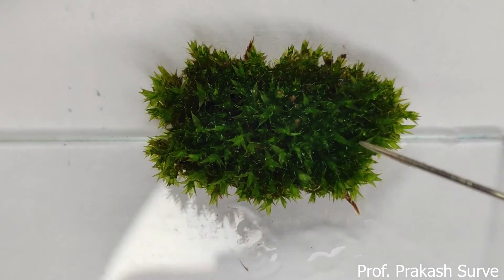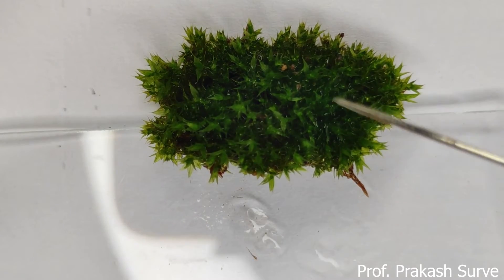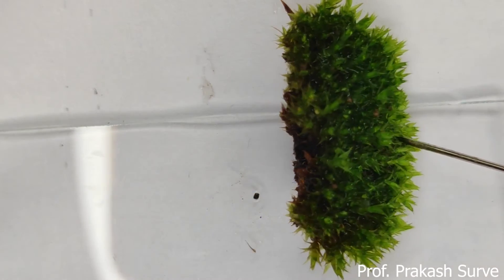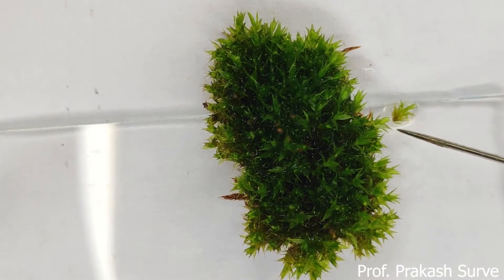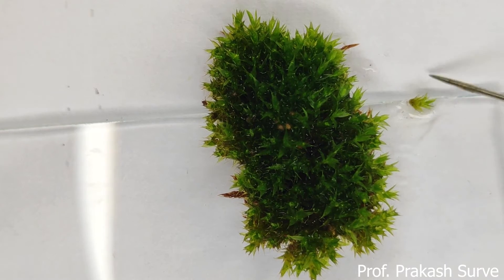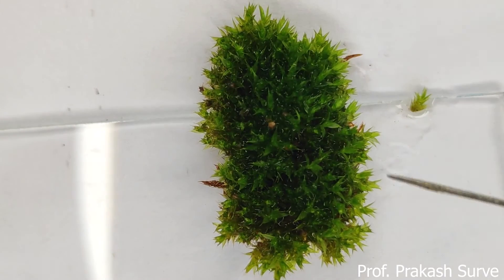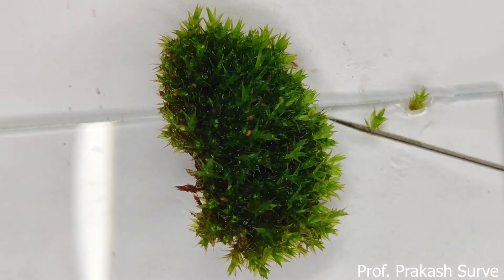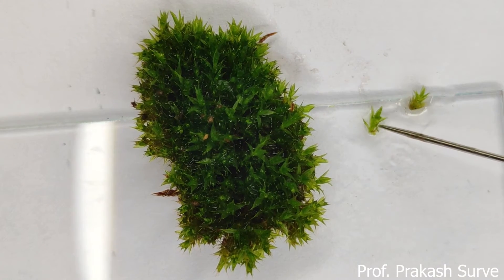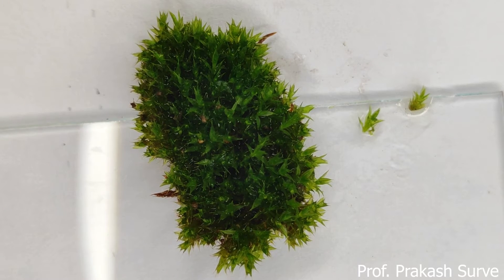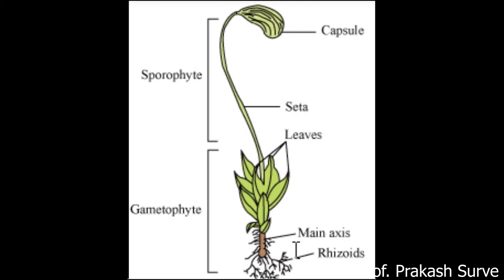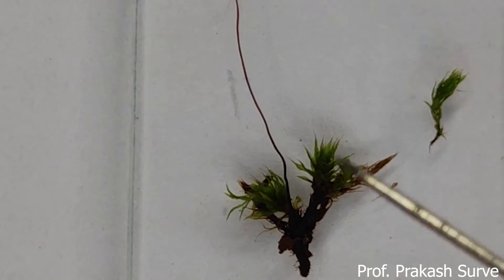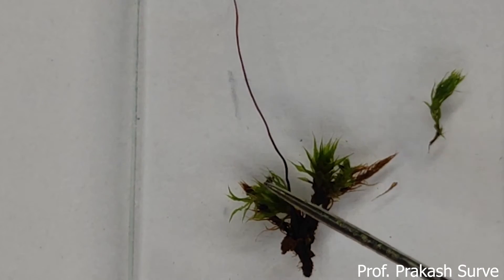Separating the plant we can observe the stem-like structure and leaf-like structures. The whole gametophyte and sporophyte together form the complete plant body. The lower portion is the gametophyte and the upper portion is the sporophyte. The lower side has rhizoids, and the gametophyte has the leaf-like structure.